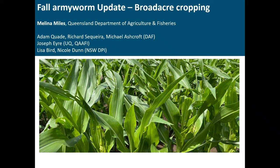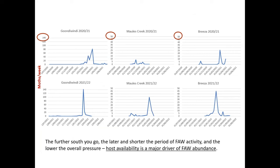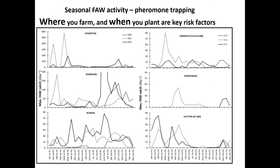Starting with fall armyworm, I want to run over some of the basics. One of the first things that's become really apparent over the last three years is that the crops you grow, as well as where you are from north to south, severely impacts the likelihood of having a problem with fall armyworm. In some regions we see a clear differentiation between fall armyworm activity in spring versus summer. We've seen a dramatic shift towards early planting, and we haven't seen all the scenarios play out in Australia yet.